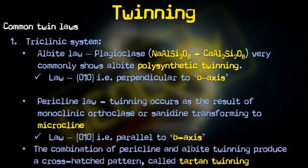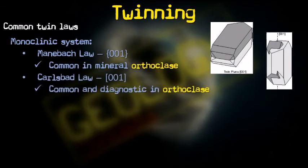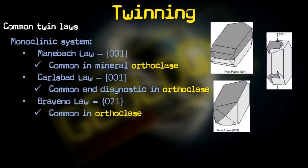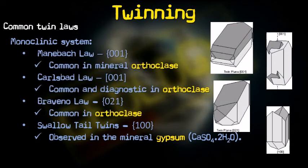In the monoclinic system, we have the Manebach law, (001), common in orthoclase. Then the Carlsbad law, (001) as a zone symbol — meaning it is a twin axis — also common in orthoclase. Then the Baveno law, (021), common in orthoclase. And swallowtail twins, (100), a composition plane observed in monoclinic gypsum. In the monoclinic system, Carlsbad law defines a twin axis, while Manebach, Baveno, and swallowtail are composition planes.